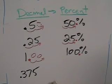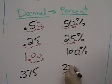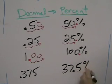So, 0.375, according to the pattern, would be 37.5%.